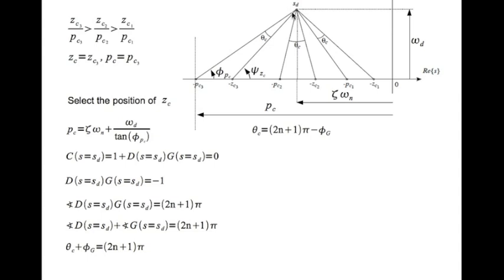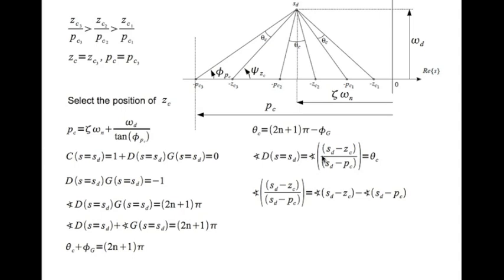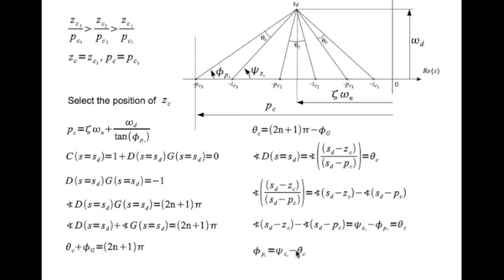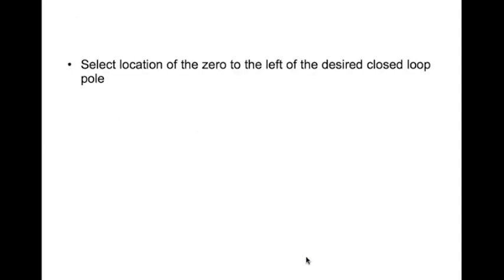As soon as you select sd, phi_g is fixed, which means theta_c is fixed. The angle of the controller can also be written as the angle of (sd - zc)/(sd - pc), which equals phi_zc minus phi_pc = theta_c. Therefore phi_pc = phi_zc - theta_c.